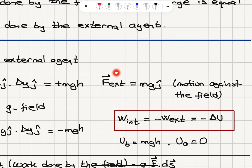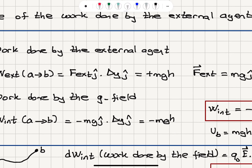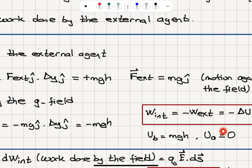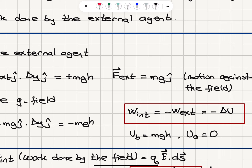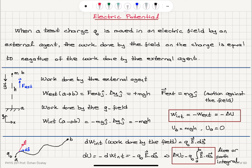We have an external force mg j-hat exactly balancing the gravitational force. Our conclusion is that work done by internal forces is minus the work done by the external agent, which equals minus the change in potential energy due to the work-potential energy theorem. So the potential energy at point B must equal mgh and potential energy at point A must equal zero.